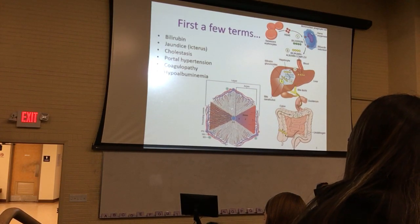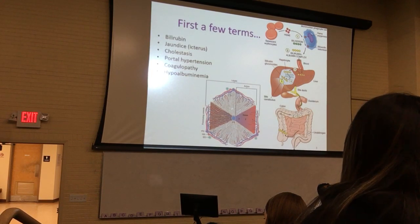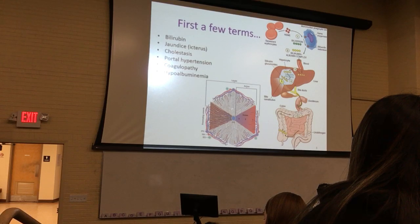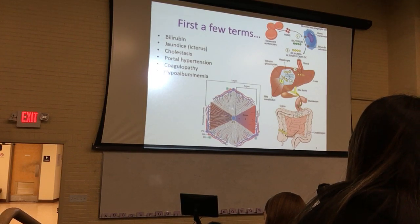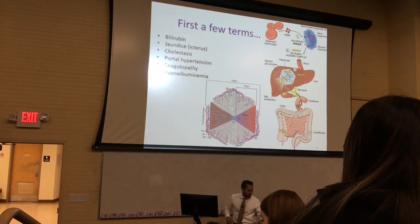So if the liver doesn't make albumin, what happens to the fluid? It stays in the tissue. Where do you think it accumulates? Usually right here — and you'll see that in a second.